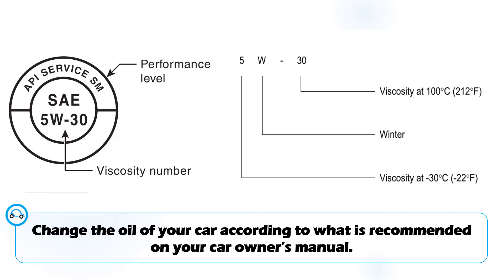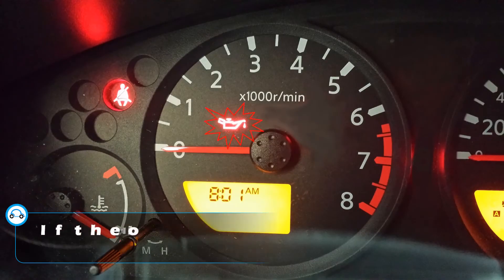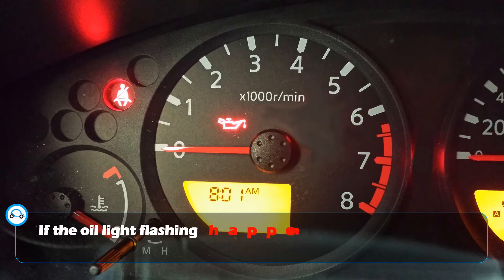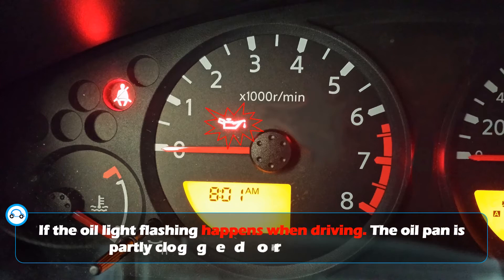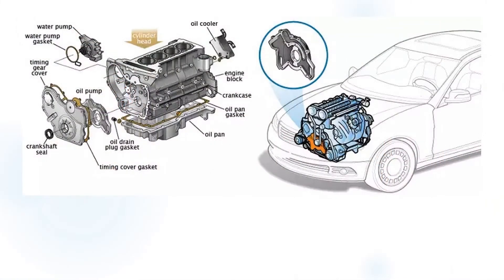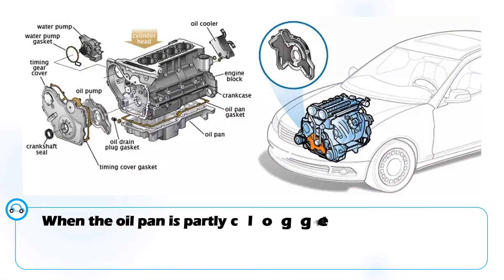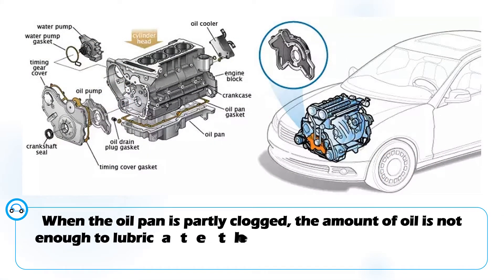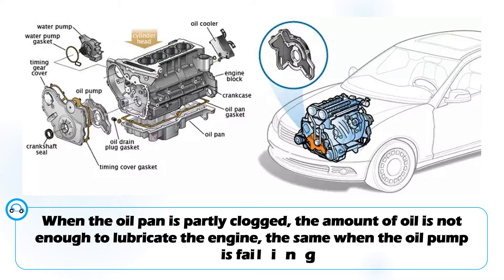When the oil light flashing happens while driving, the possible cause is a partially clogged oil pan or a failing oil pump. When the oil pan is partly clogged, the amount of oil going to the engine is not enough to lubricate the engine. The oil pressure inside the engine will become low, and this will trigger the oil light flashing when driving.